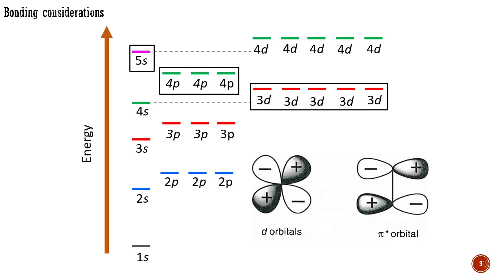In contrast, most ligands have filled sp-hybrid orbitals and, for unsaturated organic ligands, vacant antibonding π-orbitals.